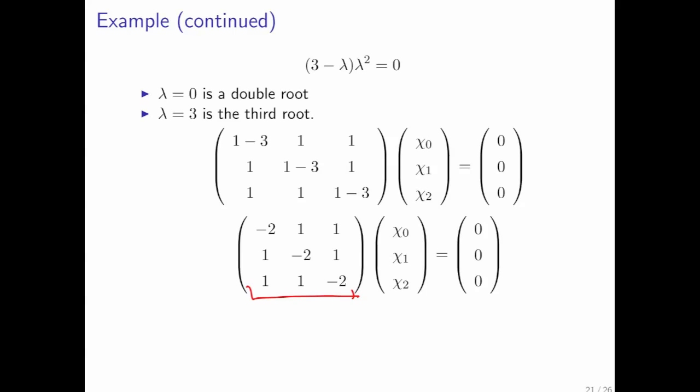Or we can do what I like to do, which is to examine this matrix and see if we can't find the vector by examination. Now, the question here is how do you take linear combinations of these columns in order to produce the 0 vector? And if you look at this carefully, if you take 1 times this column and add it to that column and add it to that column, then you actually get the 0 vector. So we conclude by examination that 1, 1, 1 is an eigenvector associated with lambda equal to 3.